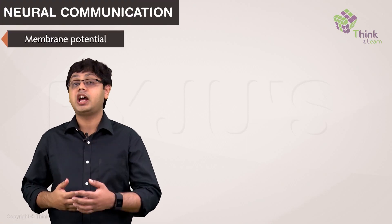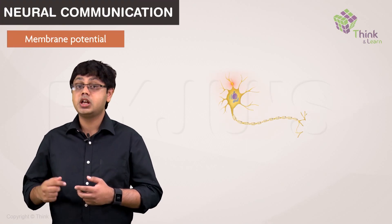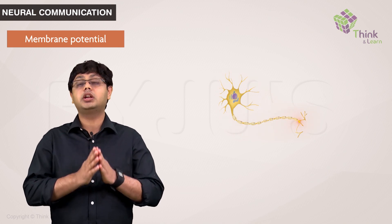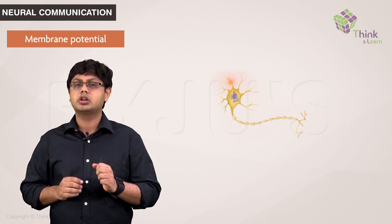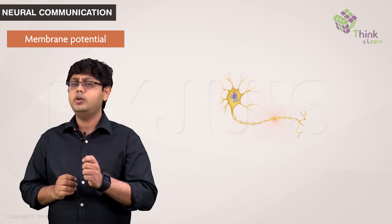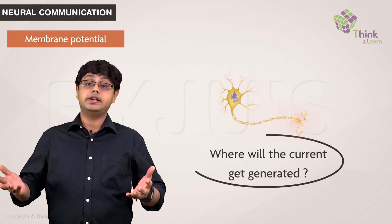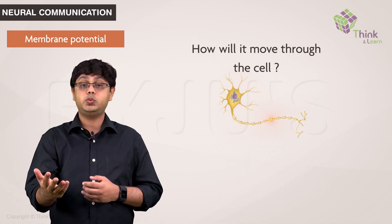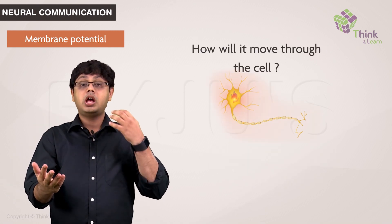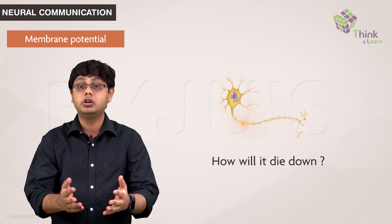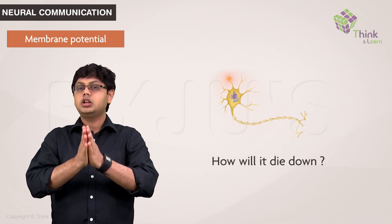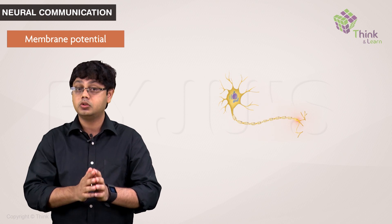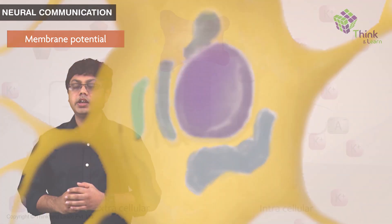We have seen the structure and type of neurons, and I have also kept saying that electrical impulses are created and travel through the neurons. How does this happen? Where will the current get generated? How will it move through the cells and between the cells? And when or how will it die down? Really curious questions and interesting to know. So let's dive in.